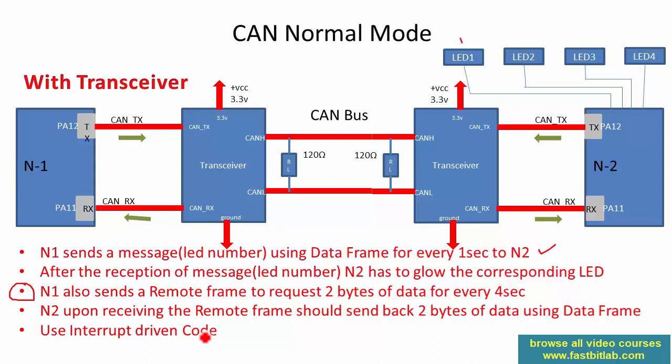We are going to look at the settings required for normal mode, and after that we can also try different bit rates such as transmitting messages at higher bit rates like one megabit per second. We will also extend this application to impose some acceptance filtering rules, as discussed in the previous videos.